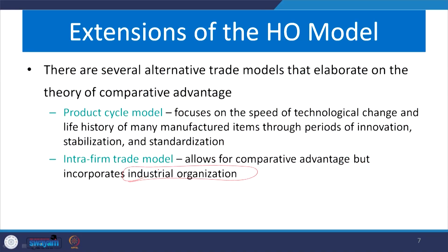Other important extensions to the HO model include the intrafirm trade model — trade within the firm — which is based on economies of scale of production. Intrafirm trade allows comparative advantage but incorporates industrial organization, strategies based on organizations, and group regimes correlating with other strategies across countries and products.